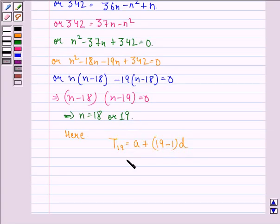Putting down the values, we have 54 plus 19 minus 1 into minus 3, that is equal to 54 minus 54, that equals 0. Now we see here that 19th term is 0, so sum of either 18 terms or 19 terms is 513.